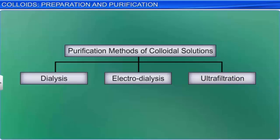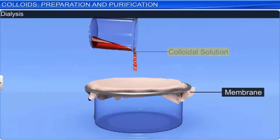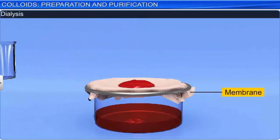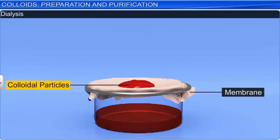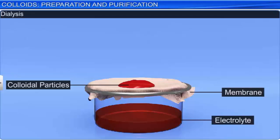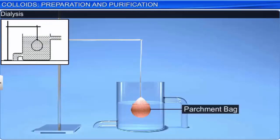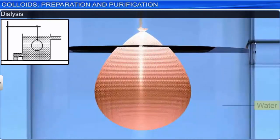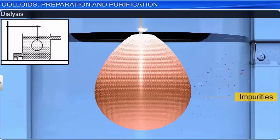The first method is dialysis. It is defined as a process to remove a dissolved substance from a colloidal solution by means of diffusion through a suitable membrane. This method is based on the fact that colloidal particles cannot pass through a parchment or a semi-permeable membrane, but the ions of the electrolyte can. The colloidal solution is taken in a bag of cellophane or parchment, which is suspended in a vessel through which fresh water flows continuously. The impurities slowly diffuse out of the bag, leaving behind a pure colloidal solution. The apparatus used for this purpose is called a dialyser.